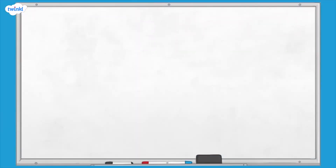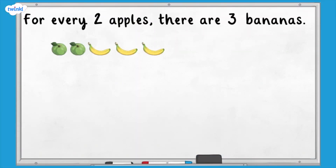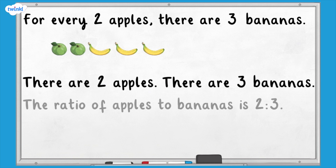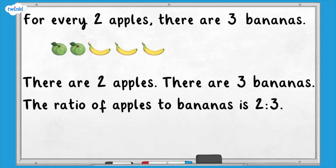In a fruit bowl, there are two apples for every three bananas. There are two apples, there are three bananas. The ratio of apples to bananas is two to three. Remember, we use the ratio symbol, which is a colon, between the numbers, and the parts stay in the same order as in the question.